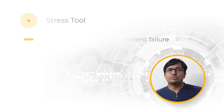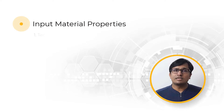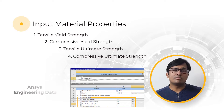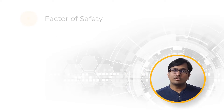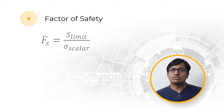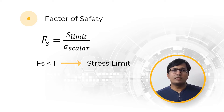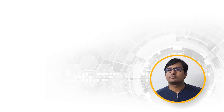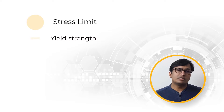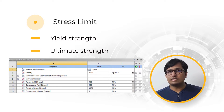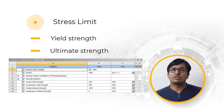Before using this tool, the input material properties that can be defined are tensile yield strength, compressive yield strength, tensile ultimate strength, and compressive ultimate strength. These input data are the limit stress that users input as the yield or ultimate strength of the material. The factor of safety is defined as the ratio of the limit stress to the stress. When the factor of safety is less than 1, this indicates that the material has reached the stress limit and can be deemed as failed for that criteria. The stress limit can be set to yield strength or ultimate strength, with values defined in engineering data. Note that the yield strength or ultimate strength in engineering data is only for calculation of safety factor — it does not make the analysis or the material non-linear.